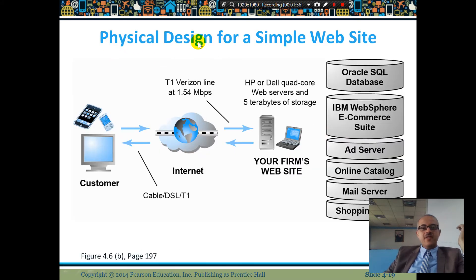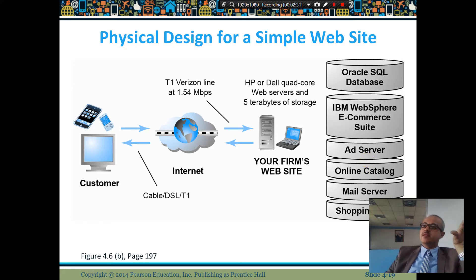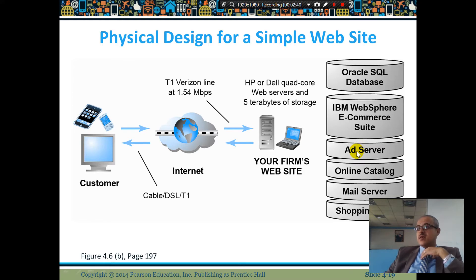A physical design example: the customer can access on a mobile phone, tablet, or PC, connects to the internet, and then there's your firm's website — your server. You can specify the type of server, for example quad core, how much storage like five terabytes. On the back end you have a shopping cart, mail server, online catalog, and ad server. If you want to display ads, you connect to Google's database of ads or some other ads database.